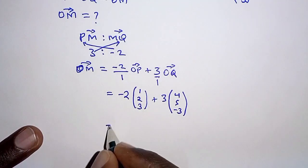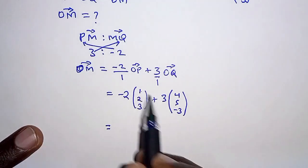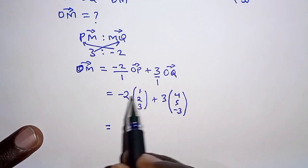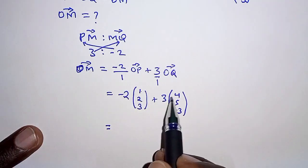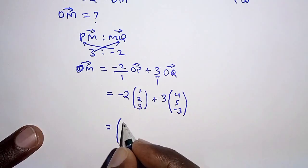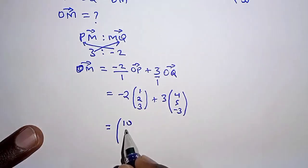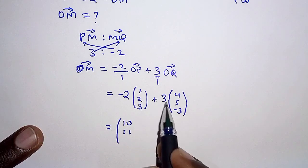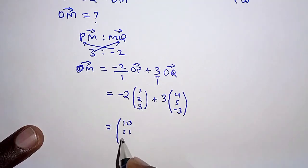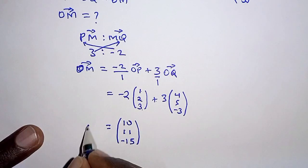Working out this, we have negative 2 times 1 plus 3 times 4, that is negative 2 plus 12, that should give us 10; negative 4 plus 15 that should give us 11; negative 6 minus 9 that should give us negative 15. So this is OM.